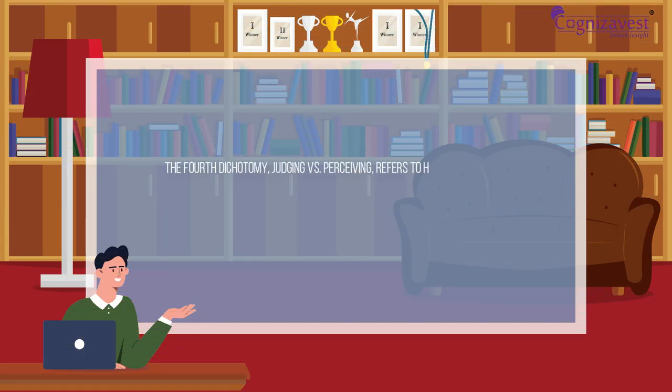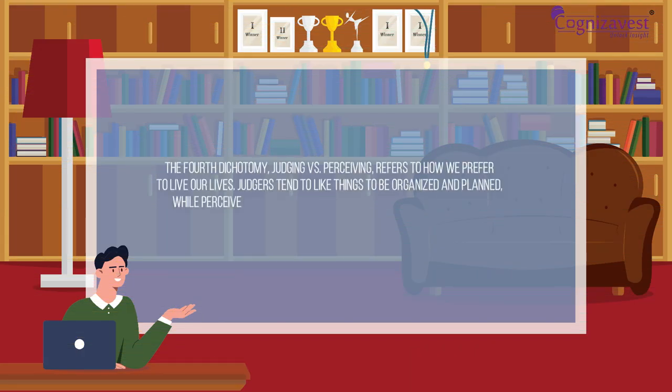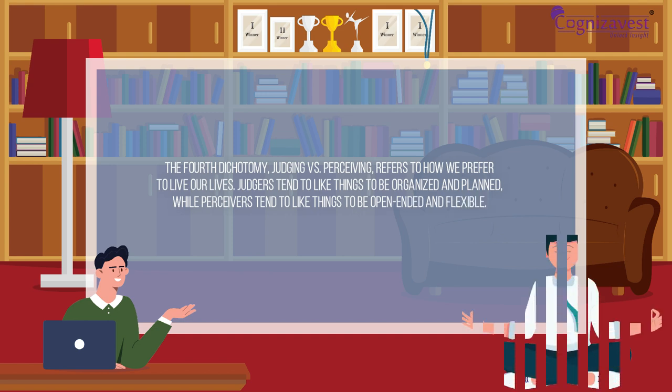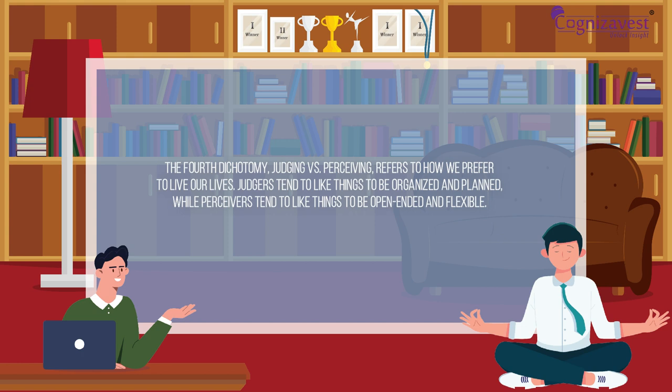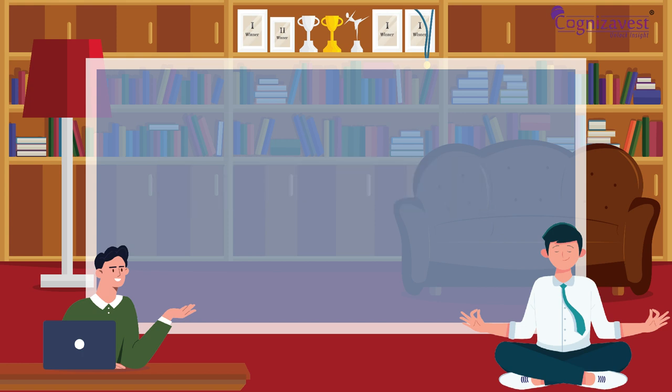The fourth dichotomy, judging versus perceiving, refers to how we prefer to live our lives. Judges tend to like things to be organized and planned, while perceivers tend to like things to be open-ended and flexible.